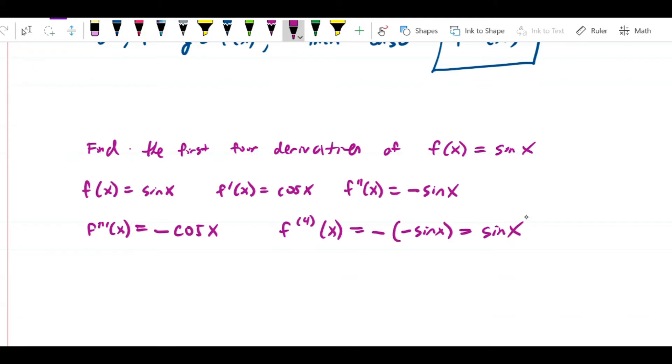The interesting thing here is that this goes around in a cycle of four. It goes from sin(x) to cos(x) to -sin(x) to -cos(x) and then back to sin(x). So it shouldn't be surprising that, although the problem didn't ask for it, if I found the fifth derivative, that's just going to be cos(x). We go in this pattern where every four it just repeats.